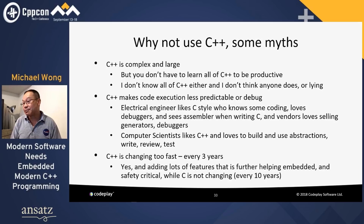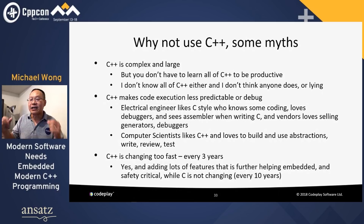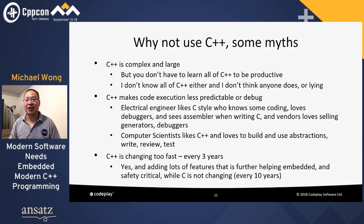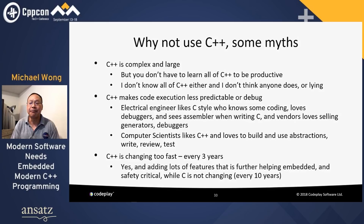The myth that C++ makes code execution less predictable is what most electrical engineers hired to do embedded programming will say, because they love C style and think almost in Assembler when writing C code. Computer scientists like C++ and love to build abstractions to get into that write/review/test cycle. You might say C++ is changing too fast — yes, it's changing every three years, adding features that help embedded and safety-critical. While C is not changing, still on about a 10-year cadence.